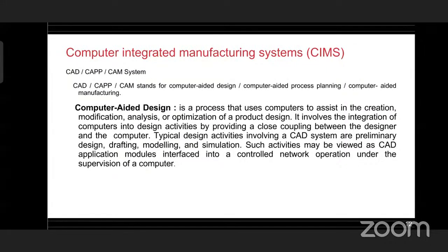A CAD system consists of three basic components: hardware (which includes computer and input/output devices), application software, and operating system software, which acts as an interface between the hardware and the application software. The CAD system functions can be grouped into three categories: geometrical modeling, engineering analysis, and automated drafting. Geometric modeling constructs graphic images of a part using basic geometric elements such as points, lines, and circles under the support of CAD software. Wireframe is one of the first geometric modeling methods, using points, curves, and other basic elements to define objects.